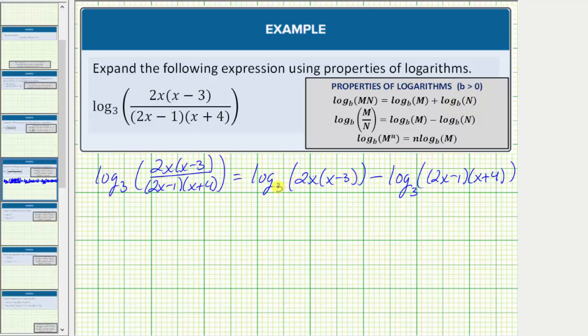So for this first logarithm, we have log base three of our product of three factors. One factor is two, one factor is x, and one factor is x minus three.